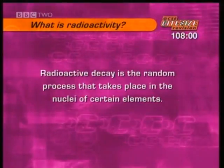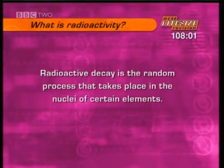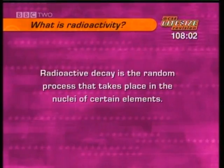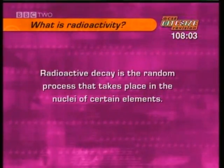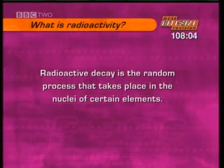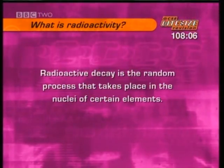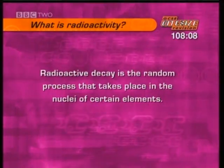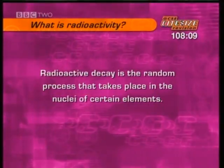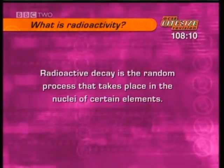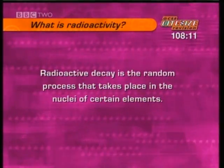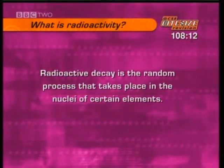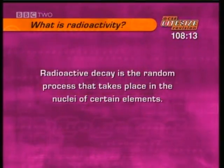Radioactive decay is the random process that takes place in the nuclei of certain elements. There are three main types of radiation. Watch the next clip and make a note of what they are and what materials they can pass through.